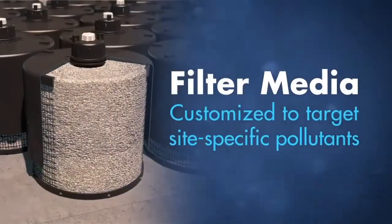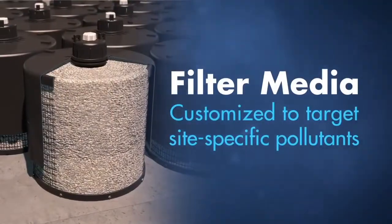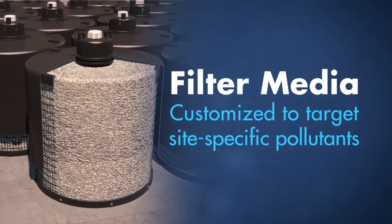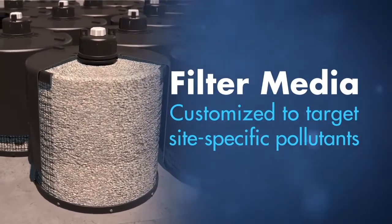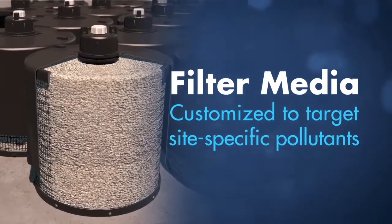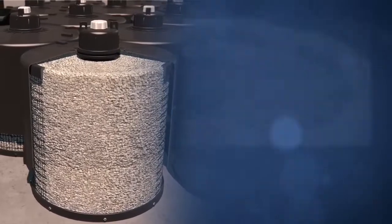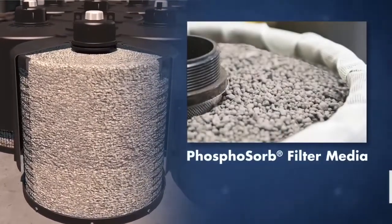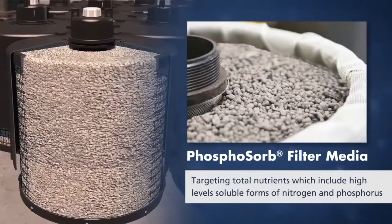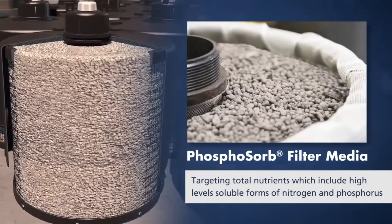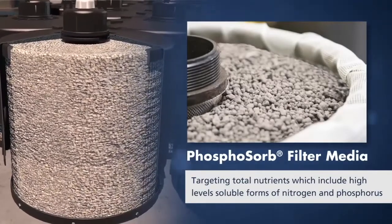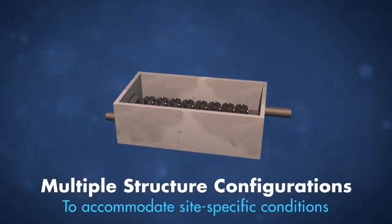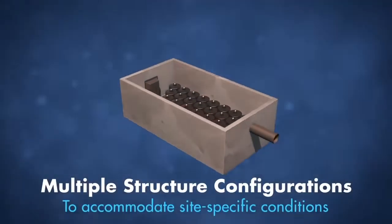The storm filter cartridge has customisable media options designed to target site-specific pollutants. Our most commonly used media options are ZPG and Phosphosorb. Phosphosorb is a proprietary media blend designed to target both TSS and total nutrients, particularly when high levels of soluble forms of both nitrogen and phosphorus are present.